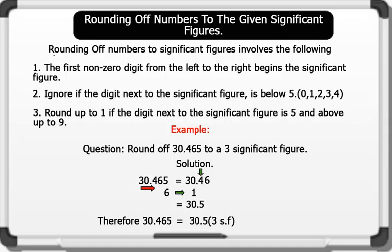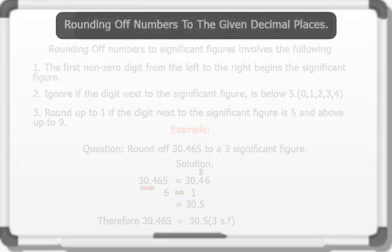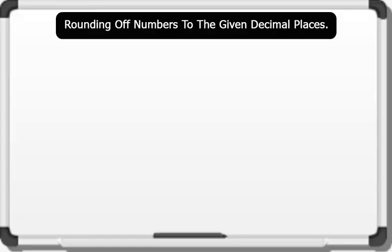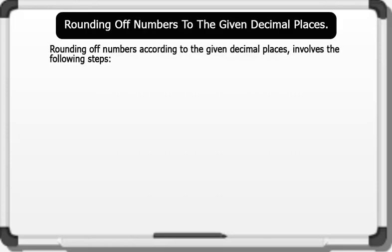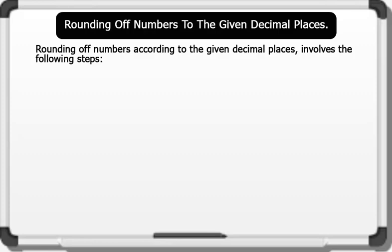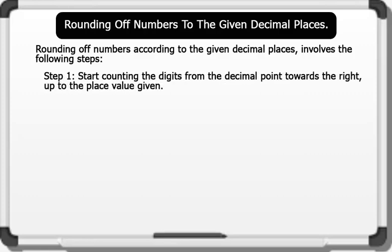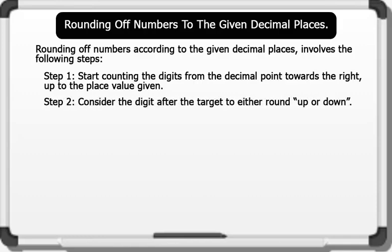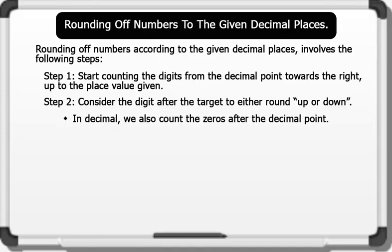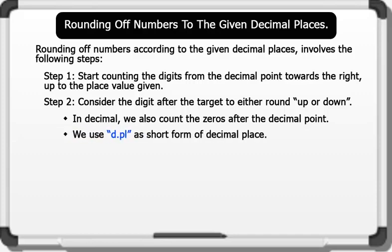Next, let's see rounding off numbers to a given decimal place. Rounding off numbers to the given decimal places involves the following steps. Step 1: Start counting the digits from the decimal point towards the right, up to the place value given. Step 2: Consider the digit after the target to either round up or down. In decimal, we also count the zeros after the decimal point. We use d.p. as short form of decimal place.